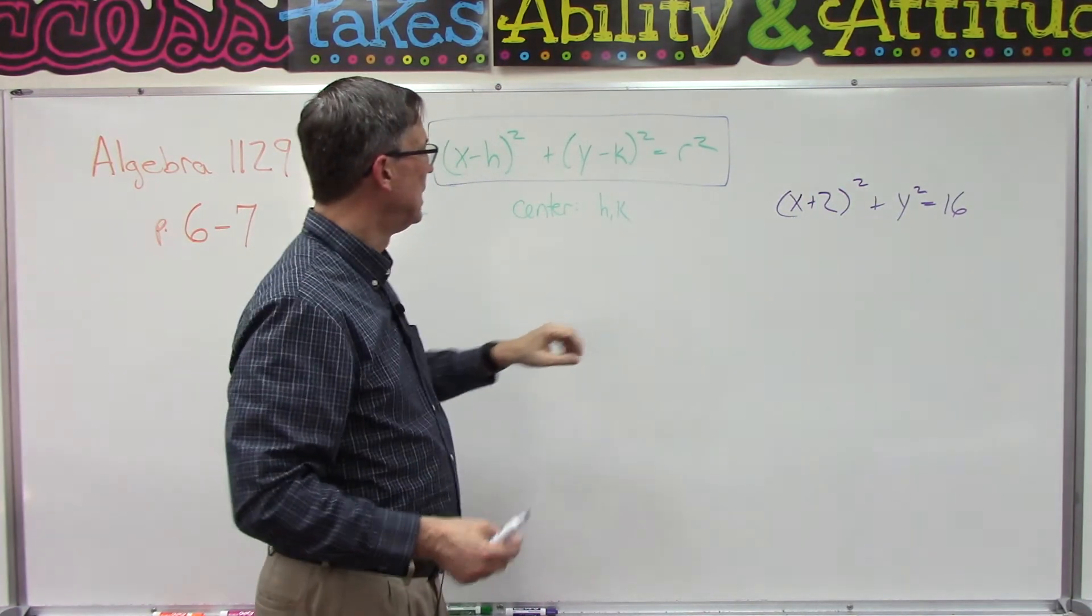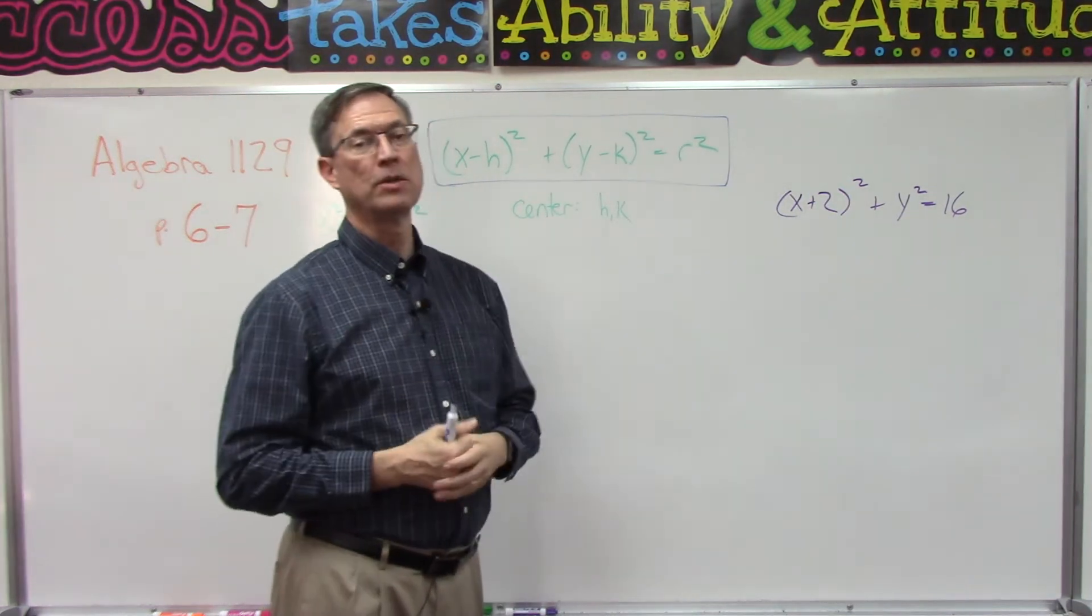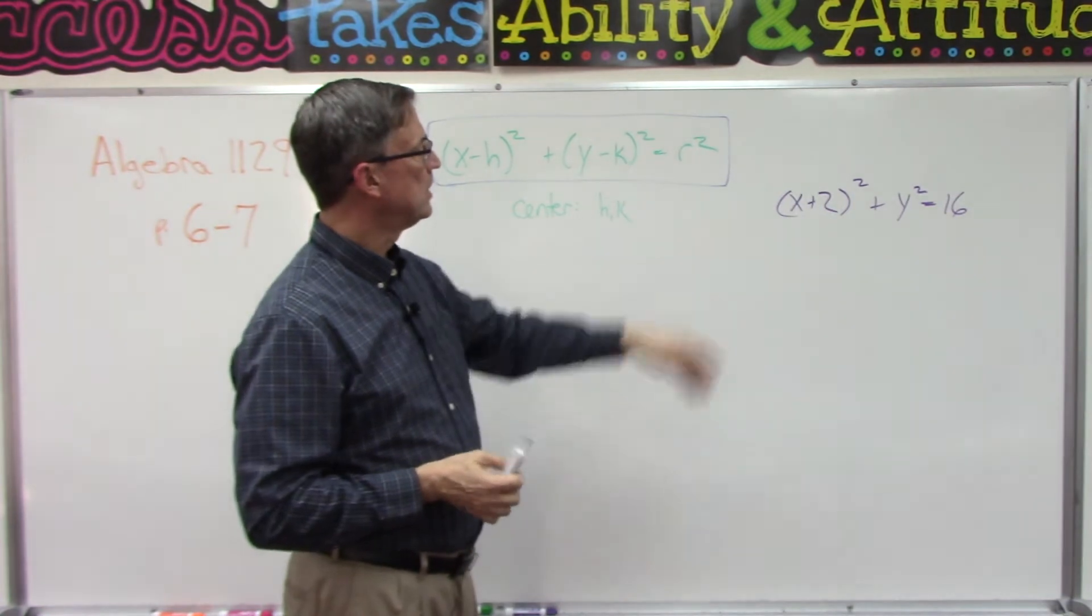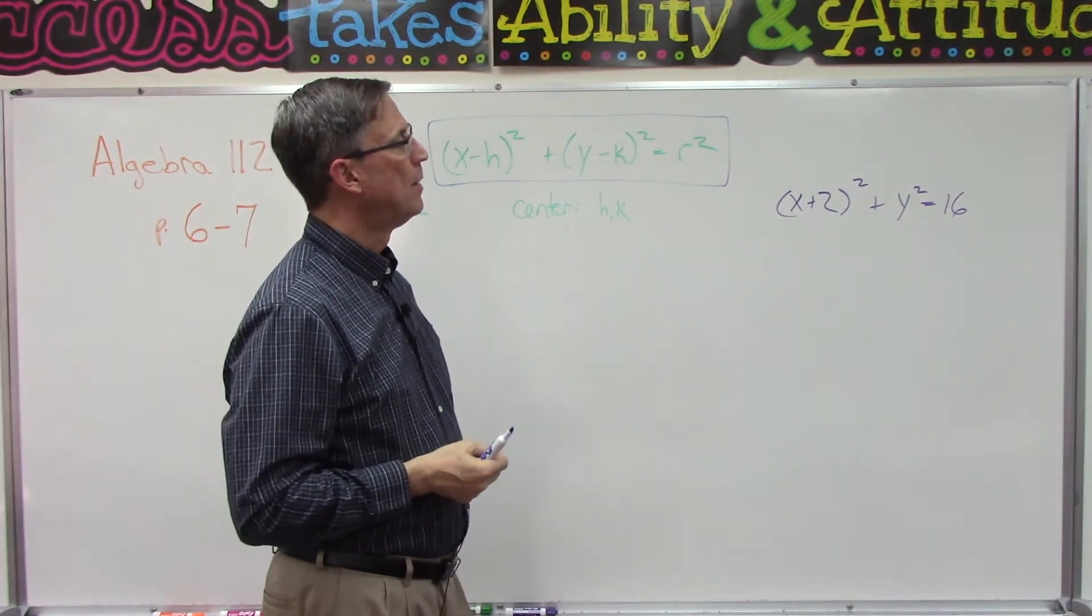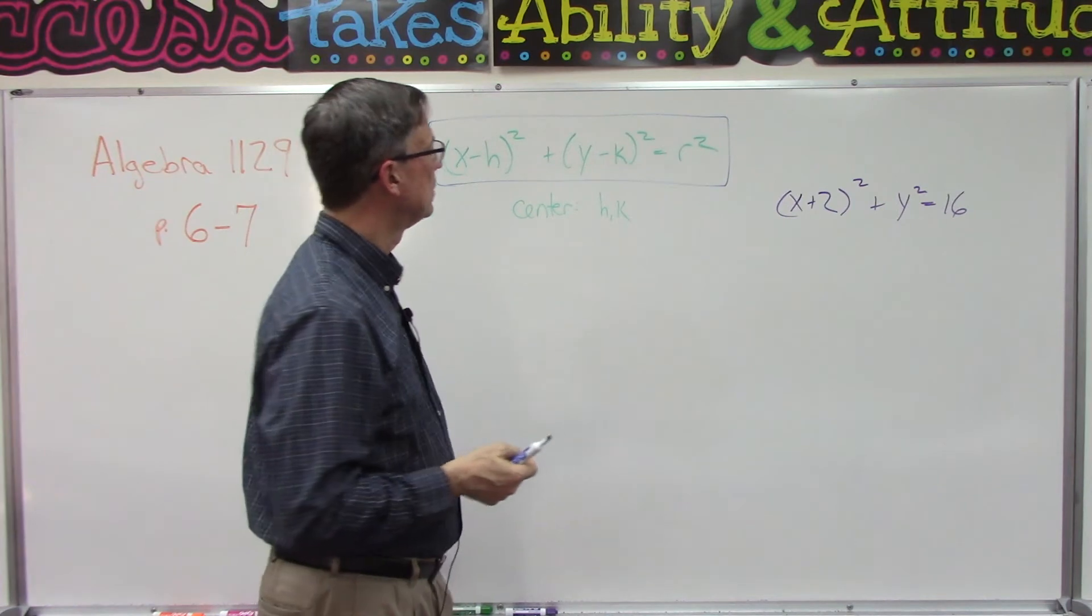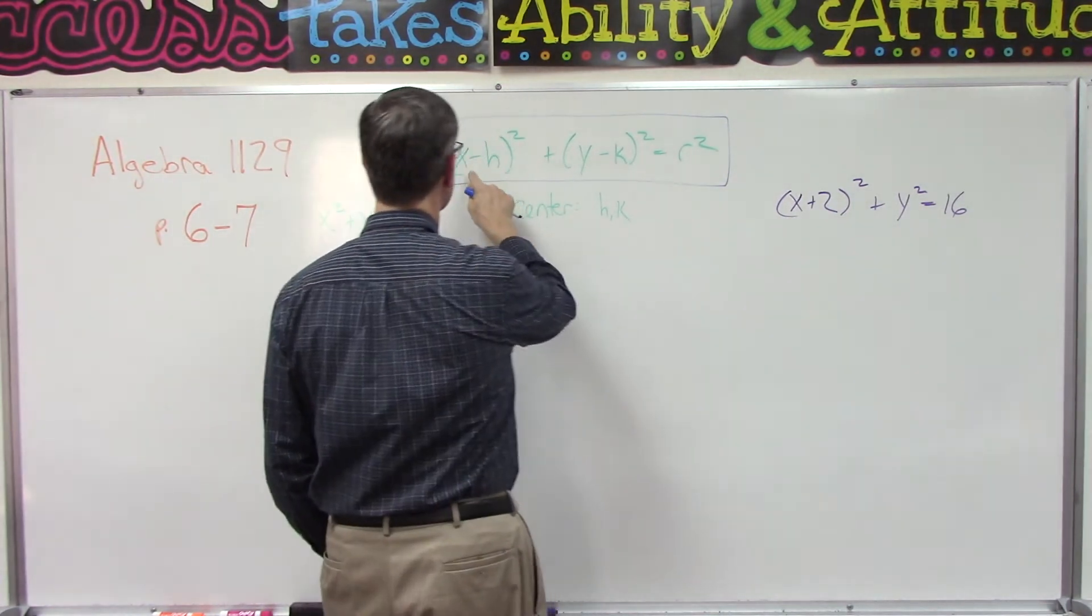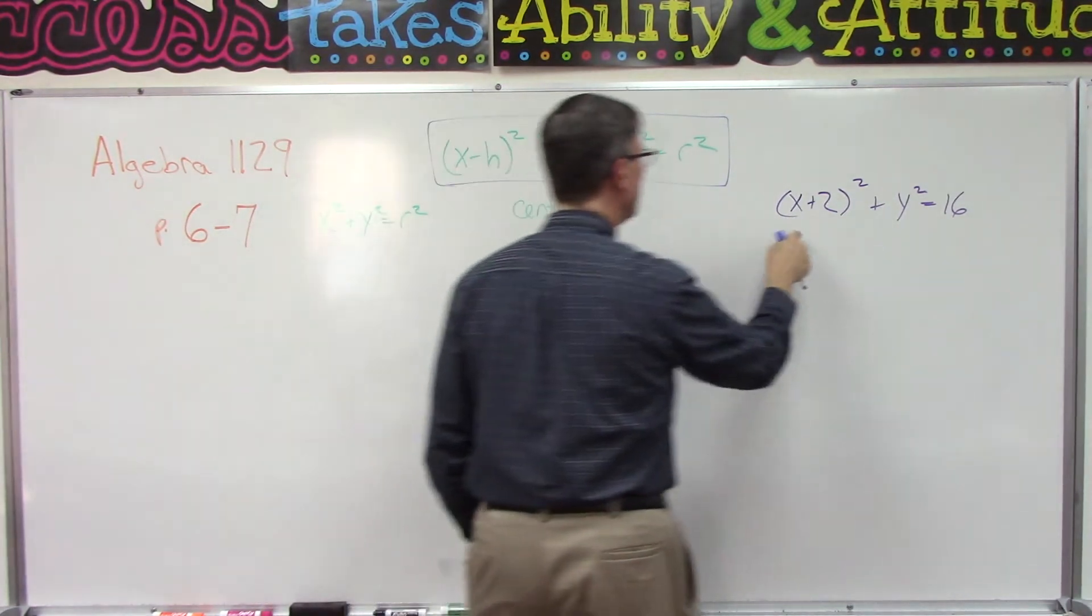Then we would still get the radius from the square root of whatever that number is, and from there we can sketch the circle. Let's take one example from our homework and get you started. You need to finish this one, but let's look here.